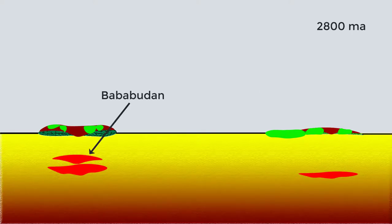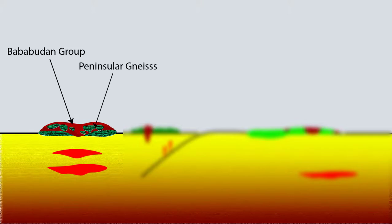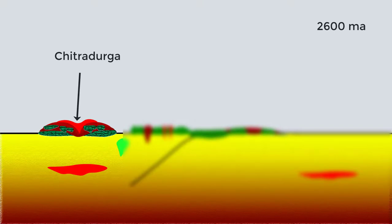About 2800 million years back, Bababudan group, which is another greenstone belt, deposited and caused partial melting of older crust to form TTGs, and these are another component of Peninsular Gneiss. This was followed by the deposition of Chitradurga group. At the same time, Dharwar Supergroup of Eastern Dharwar Craton deposited.